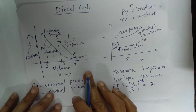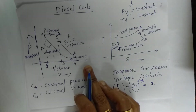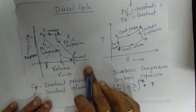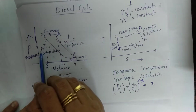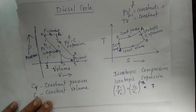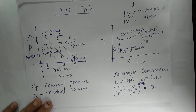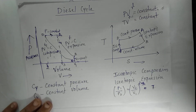We have already studied the relationship between pressure, volume, and temperature. For an adiabatic process, the equation is PV raised to gamma equals a constant, or P1/P2 = (V2/V1) raised to gamma. That is, P1 V1^gamma = P2 V2^gamma — the relation between pressure and volume in an adiabatic process.